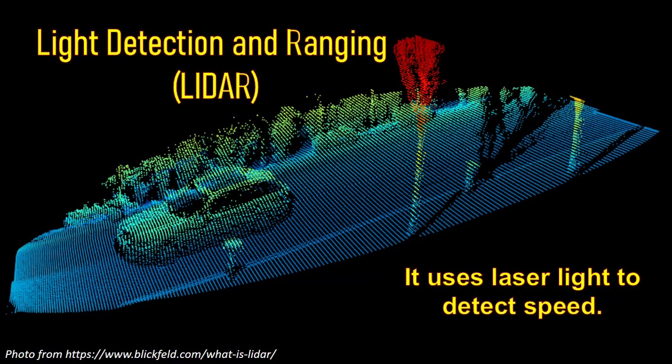Another motion detector is Light Detection and Ranging, or LIDAR. It works in a similar way to radar and sonar, yet uses light waves from a laser instead of radio or sound waves. A LIDAR system calculates how long it takes for the light to hit an object or surface and reflect back to the scanner. The distance is then calculated using the velocity of light.